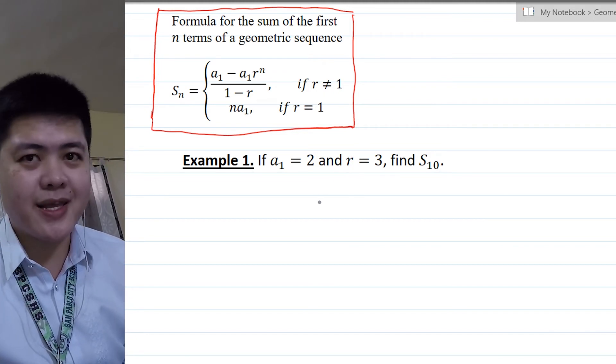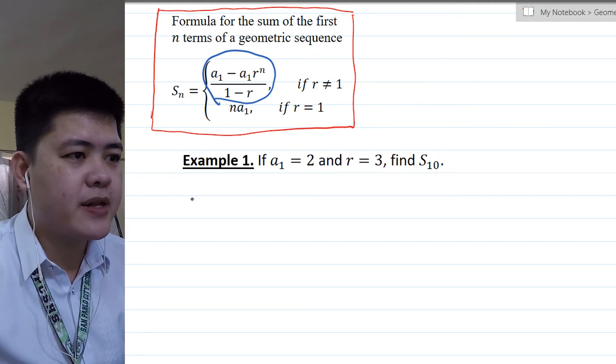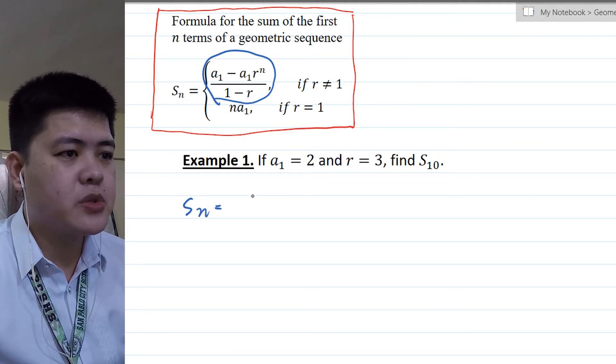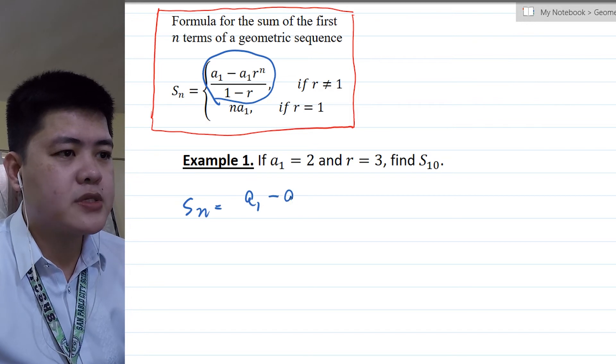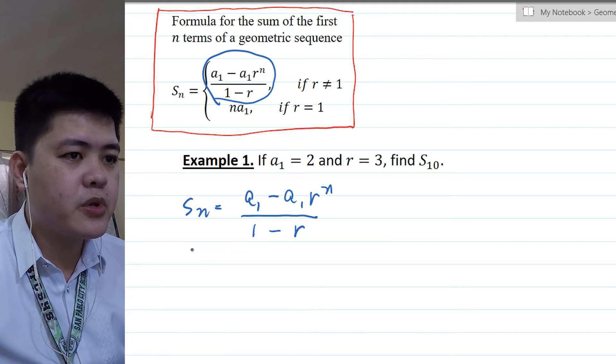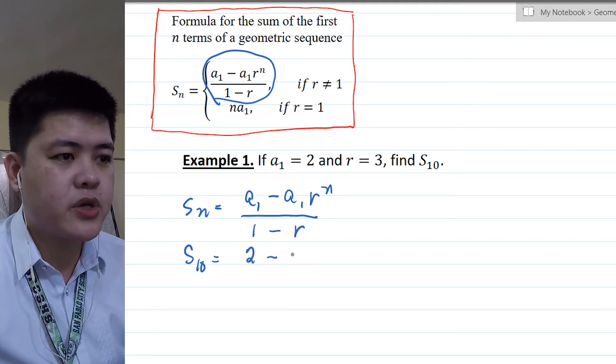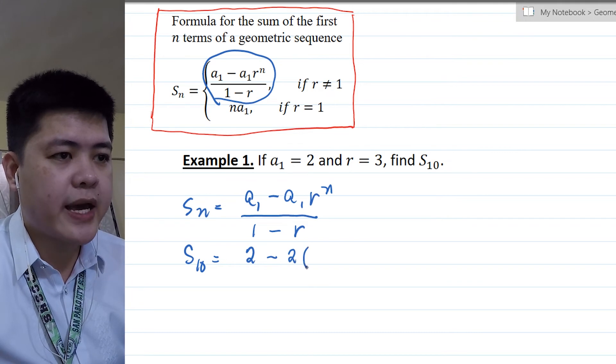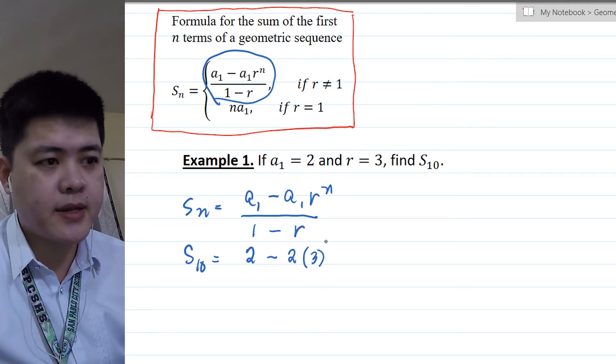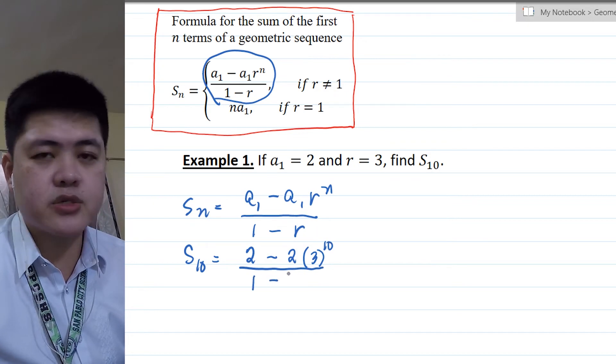Obviously, our r is not equal to 1, so we'll be using this formula. S sub n is equal to A sub 1 minus A sub 1 R raised to n, all over 1 minus R. And then we're going to plug in all the values. Your A sub 1 is 2 minus A sub 1 is 2 times common ratio is 3 raised to 10, all over 1 minus common ratio is 3.